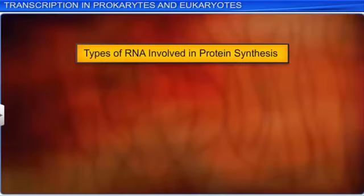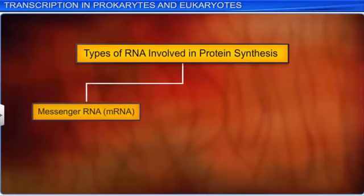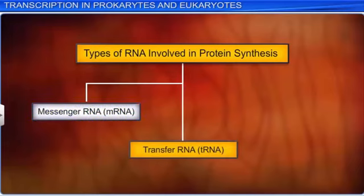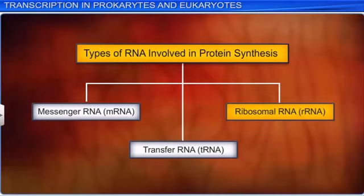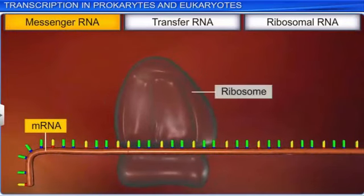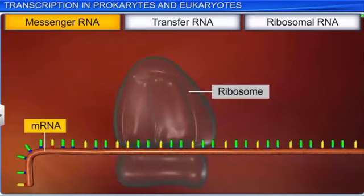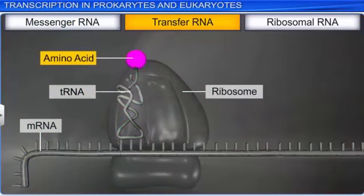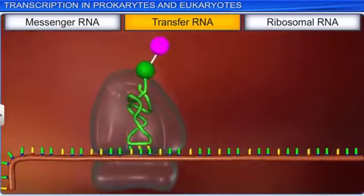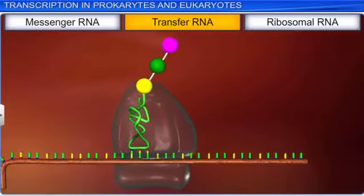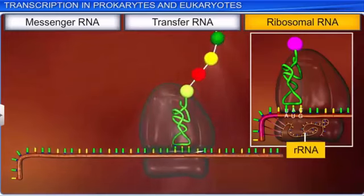There are three types of RNAs involved in the process of protein synthesis: messenger RNA or mRNA, transfer RNA or tRNA, and ribosomal RNA or rRNA. The mRNA carries the coding information to the sites of protein synthesis and helps to put together amino acids to make protein. The tRNA carries each amino acid to the ribosome according to the coded message in the mRNA. While the rRNA provides a mechanism to decode mRNA into amino acids.